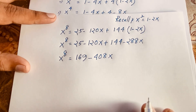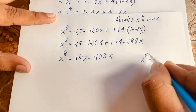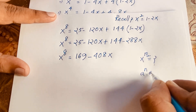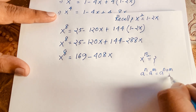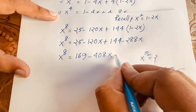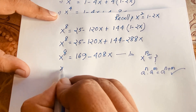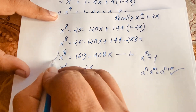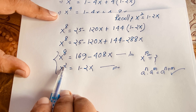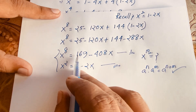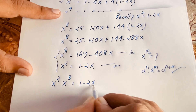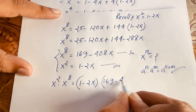Our target exponent is 10, but we have exponent 8. Using the exponential law a^n · a^m = a^(n+m), since 2 + 8 = 10, we multiply x² · x⁸. So x^10 = (1 - 2x)(169 - 408x).